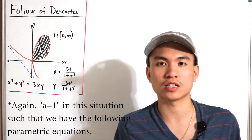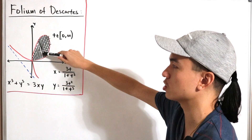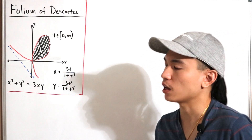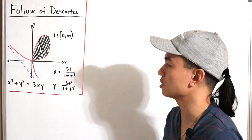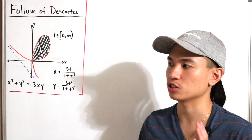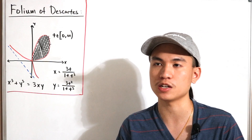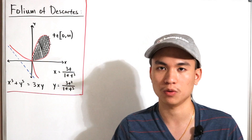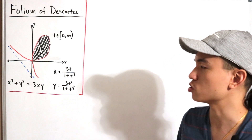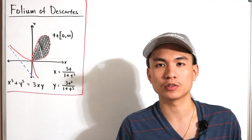The question in today's video is to calculate the area of the region enclosed by this loop. We're going to take advantage of Green's theorem, which defines the relationship between a line integral over some smooth curve C and a double integral over some region D.